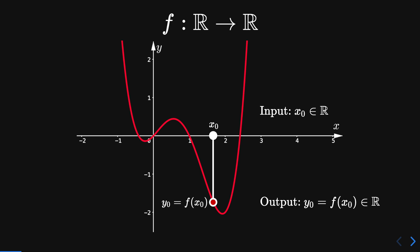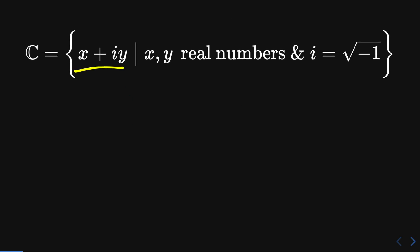Consider now the set of complex numbers. These are objects of the form x plus i times y such that x and y are real numbers and the symbol i is the square root of minus one, the imaginary constant.